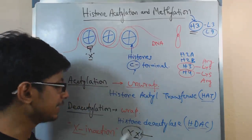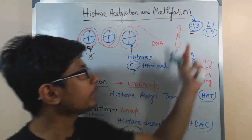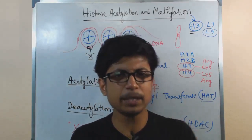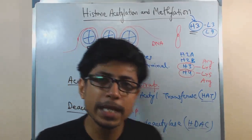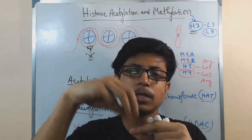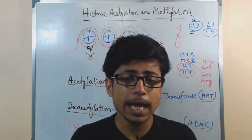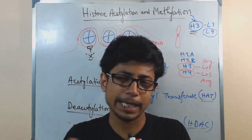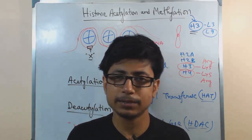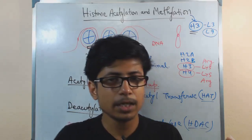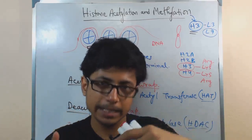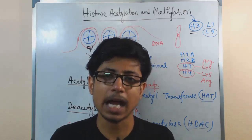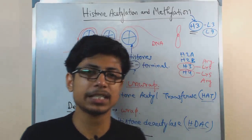That is an example of how methylation inactivates genes. On the other hand, we have also talked about methylation causing activation. It depends on the scenario. If methylation of the C-terminal tail of the histone creates a repulsive force between the DNA and the histone, the DNA is released and the gene becomes accessible. But if the methylation creates an attractive force between the DNA and the histone, the histone wraps tightly again and the genes are not accessible.